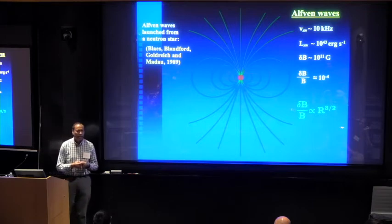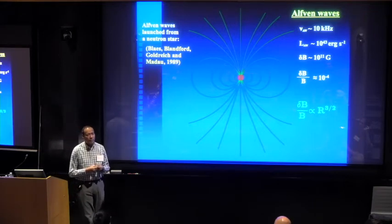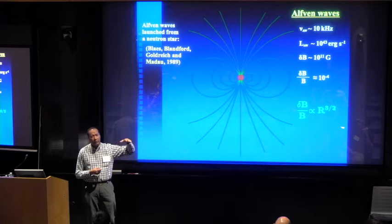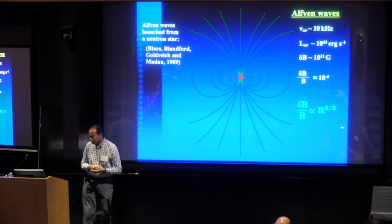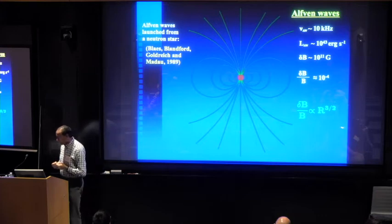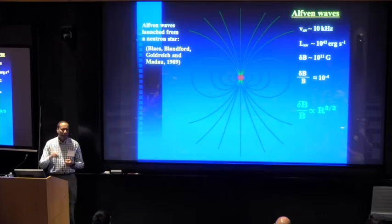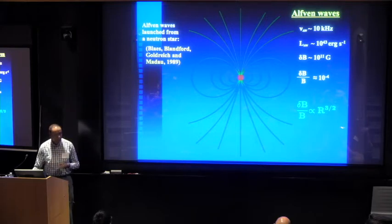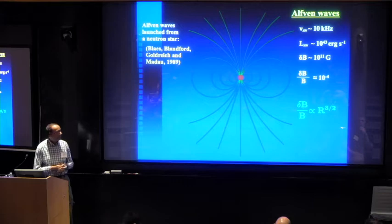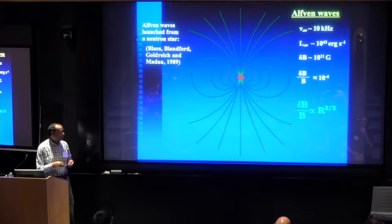That was to explain GRBs in our galaxy. That predates GRBs being established to be cosmological. In any case, the point is you have some magnetic disturbance that is launched. The luminosity of this disturbance is something on the order of the FRB luminosity, so something on the order of 10^43 ergs per second.